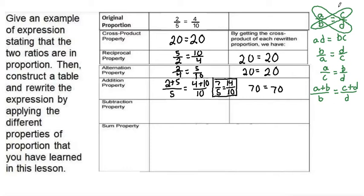The subtraction property proportion is similar in that instead of pluses, we have minuses. So it would be a minus b over b is equal to c minus d over d.